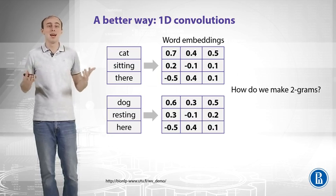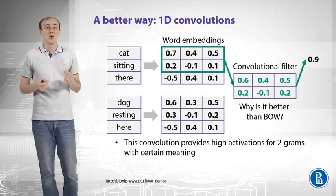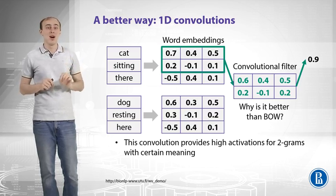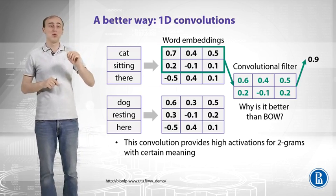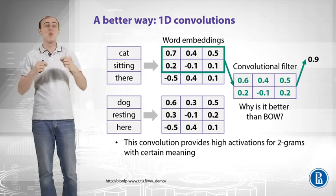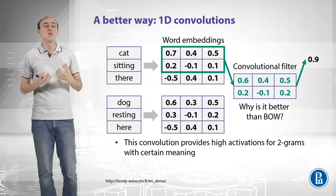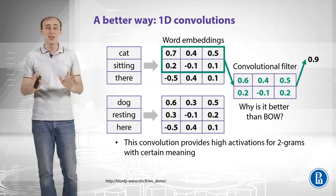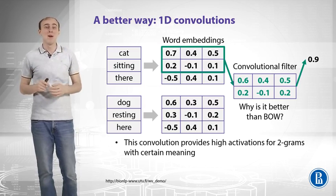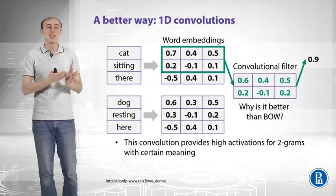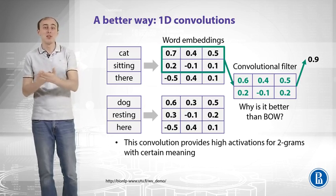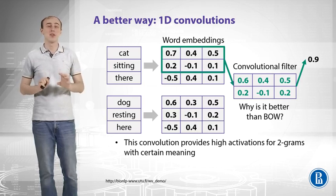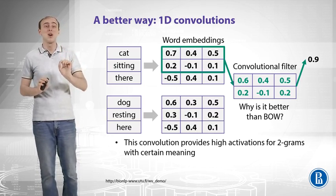So how can we analyze bigrams here? It turns out we can look at pairs of embedding vectors using a sliding window. In the green border we have the first two words, we take their word embeddings and analyze them with a neural network. For that purpose we can use a convolutional filter of the same size — when you convolve with a filter similar to the word embeddings of 'cat sitting', you will get a high activation.